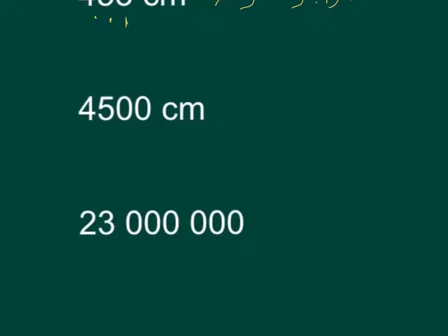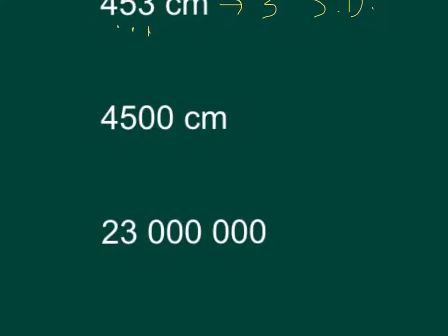The next number: 4500. When there is no decimal place, we start on the right-hand side and move towards the left until we hit the first non-zero digit. The zeros don't count — they're placeholders. From the first non-zero digit and everything to the left is significant, so in this case there are only two sig digs.